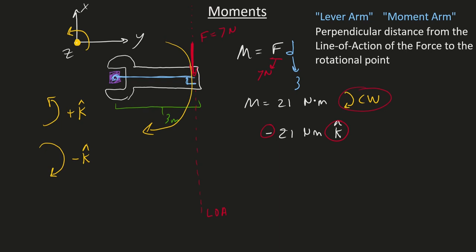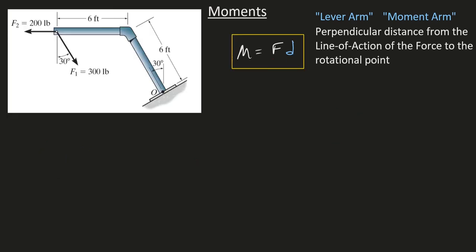Let's do another quick example using this equation. In this situation, let's calculate how likely this 200-pound force is to rotate this object about this hinge point — that is, let's calculate the moment of this 200-pound force about point O. The force is 200; it gets difficult when we try to calculate that lever arm.